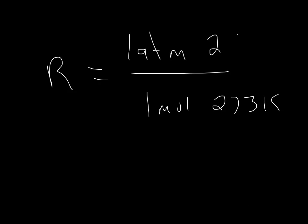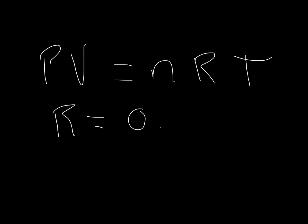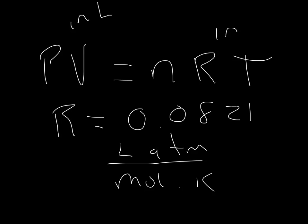So we have the value of R, we know the ideal gas law constant. The ideal gas law constant says that P times V is equal to N times R times T, where R is 0.0821 in the units of liter atmospheres per moles Kelvin.